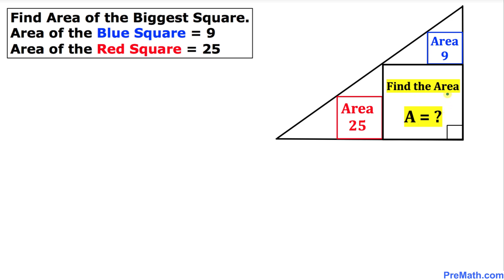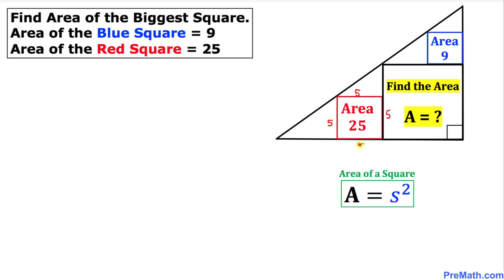Here is the area of a square formula: A equals s squared, where s is the side of a square. If we look at the red square, an area of 25 means each side is going to be 5. Likewise, the sides of the blue square are going to be 3, since 3 squared is 9 and 5 squared is 25.